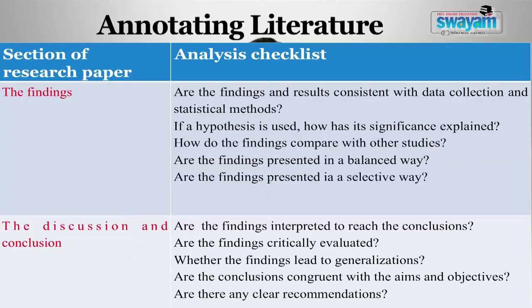Now we will have a bunch of publications which are significant for our study. The next step is annotating references. Once we are satisfied with the literature collected, we have to read each research paper thoroughly and annotate them by commenting on author, key points, critical comments and relevance. The following table gives a sample checklist for analysing a research paper, and we can create our own checklist depending upon the specificity of the literature we are reviewing.